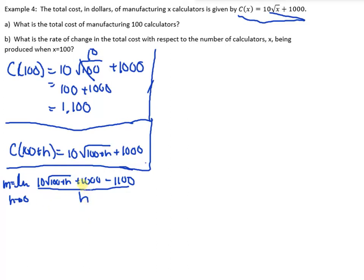10 root 100 plus h plus 1,000 minus 1,100 all over h. Let's simplify this. 1,000 minus 1,100 is negative 100 all over h.